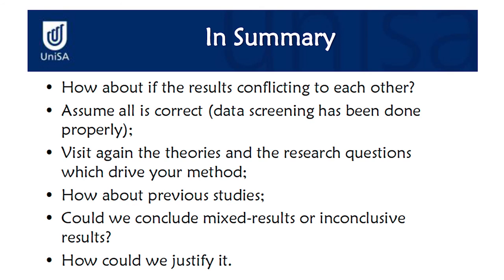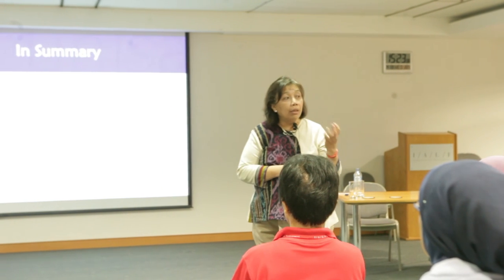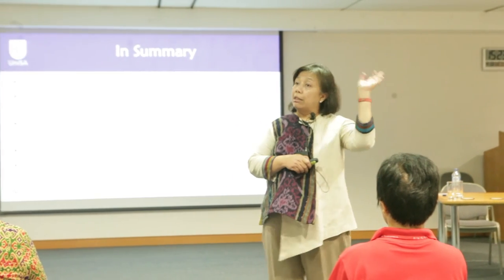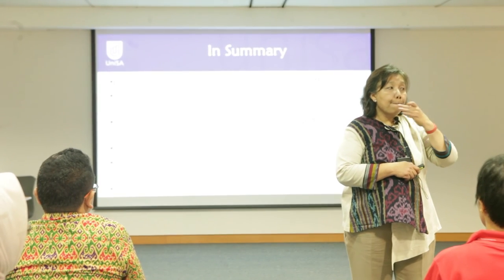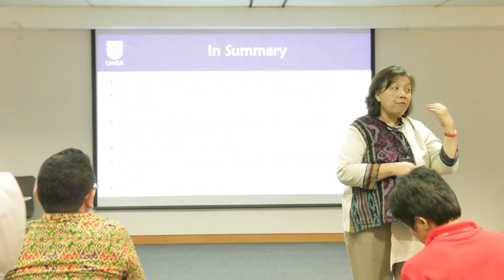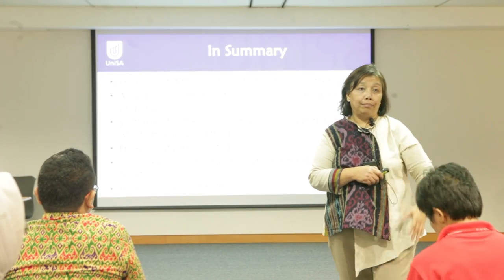In summary, what do you do if the results are conflicting? Assume all results are correct. Ensure data screening has been done properly. Revisit the theory and the research questions. Check previous studies — could we conclude it's inconclusive? How do we justify it? It could be inconclusive, but first check your assumptions, measurement, and attributes, and ensure research questions and problems have been conducted properly.